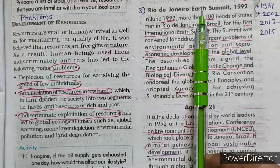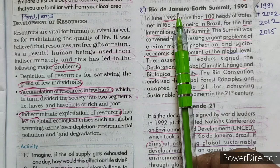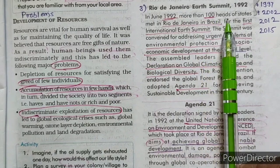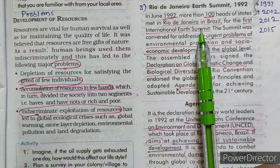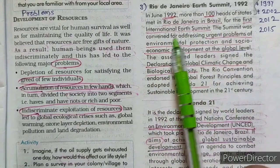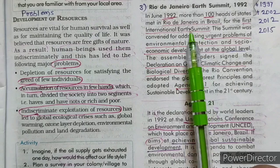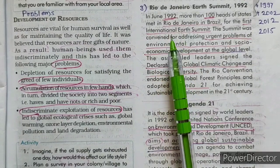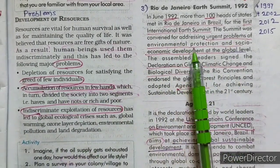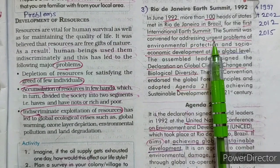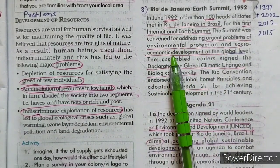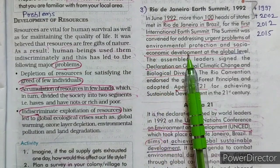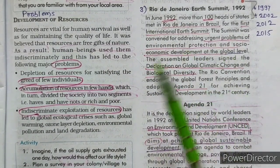The third remedial measure is the Rio de Janeiro Earth Summit. Rio de Janeiro is a city in Brazil. In 1992, heads of over 100 countries gathered and organized a meeting called the Rio de Janeiro International Earth Summit — the first international earth summit — to discuss environmental pollution, problems and damages occurring to our earth, and urgent measures for environmental protection and socio-economic development plans at global level.